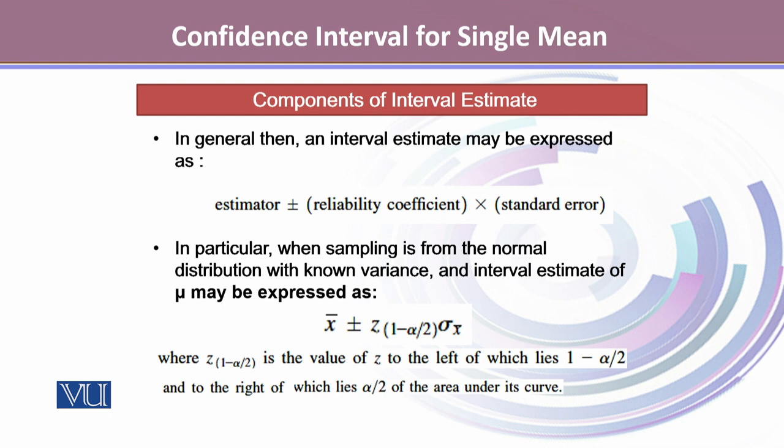When sampling from a normal distribution with known σ, an interval estimate of μ is: X̄ ± Z_(1-α/2) × σ_X̄,